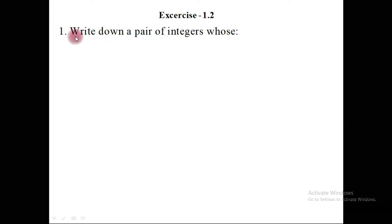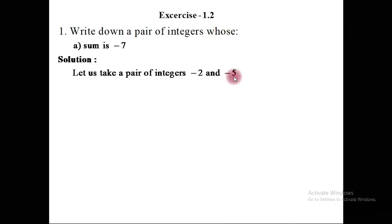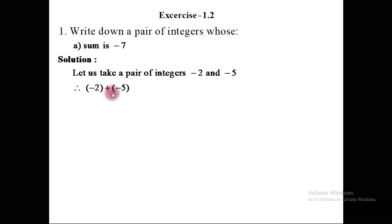Question number one, part a: write down a pair of integers whose sum is minus 7. Let us take a pair of integers: minus 2 and minus 5. We are going to take the sum of these two integers. Taking the sum of minus 2 and minus 5, removing the bracket, we get minus 2.